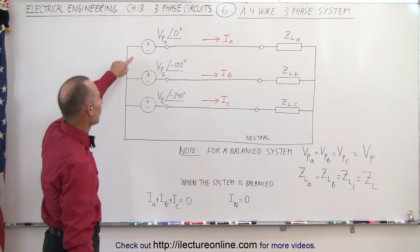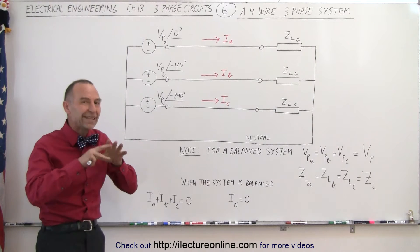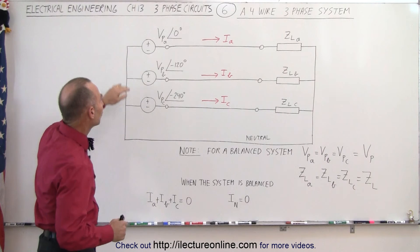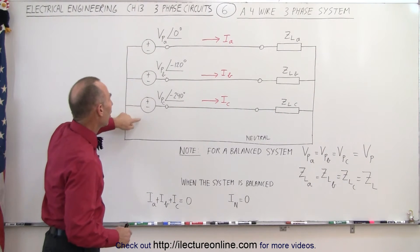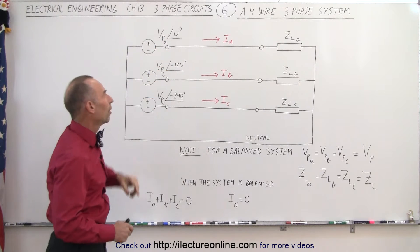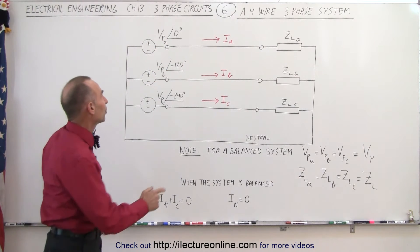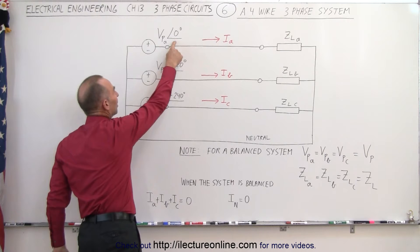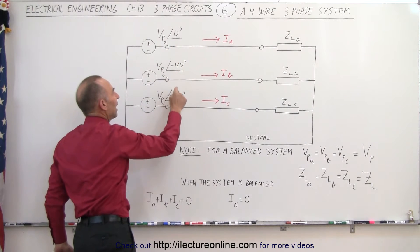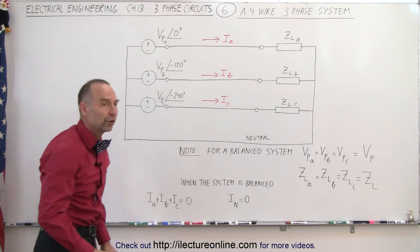First of all, we have three sources of voltage, typically all within the same generator, but the three sources are 120 degrees apart from one another in phase. In other words, the first one would be at zero degrees, the next one at minus 120, and the third one at minus 240 degrees.